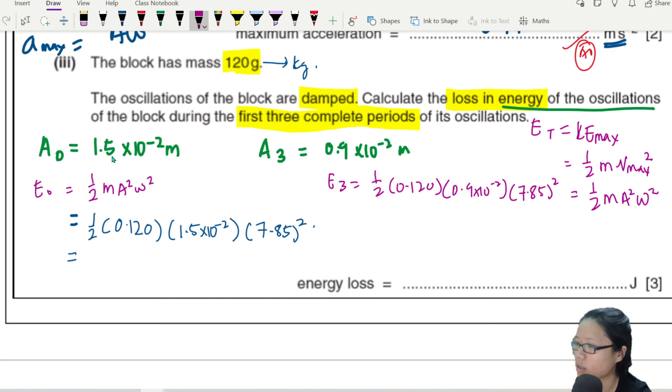I'm going to repeat this one. For E3, so that will be half, 0.120, 0.9 times 10 to the power of negative 2. Wait, not 1.5, my bad. 7.85 squared. This one I need to press calculator. Oh, hang on. There's a square here. There's a square here. So don't be me. Remember your squares.